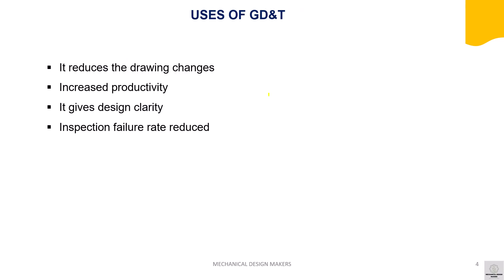Uses of GD&T: GD&T reduces drawing changes so that engineering change management can be minimized. We can get increased productivity and design clarity. Mainly, GD&T reduces the inspection failure rate, so the rejection of parts is reduced, which gives a major impact on cost.